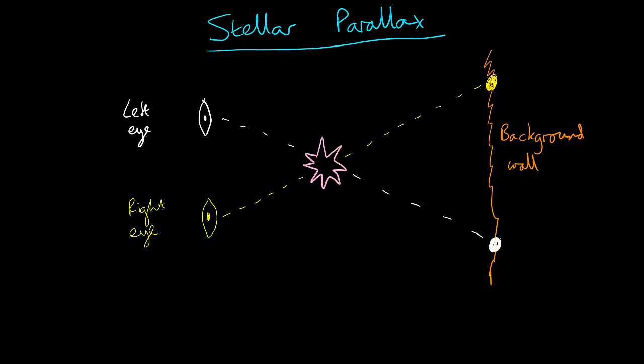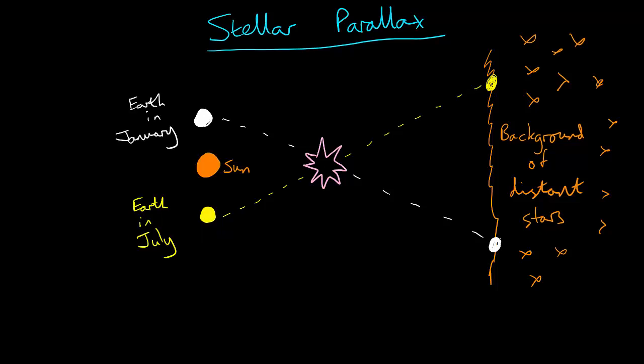star you are measuring, and the background wall is replaced with a background of very distant stars. If we move our viewing position, the star should appear to move relative to the distant stars. The closer the star is to us, the more it should appear to move. But how can we shift our viewing position? We don't need to.